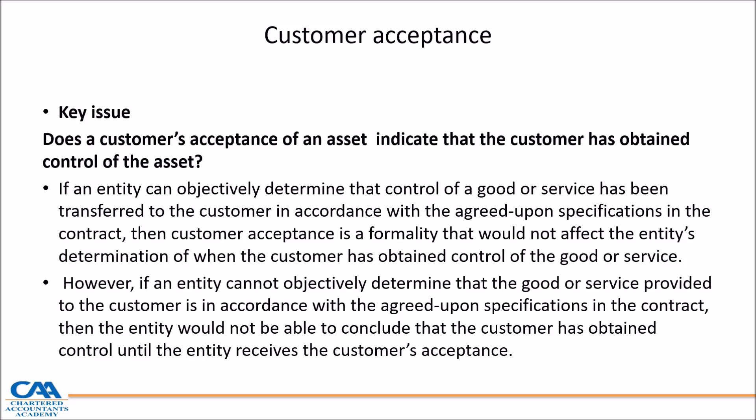Finally, customer acceptance: does a customer necessarily need to accept an asset for you to say they've obtained control? If an entity can objectively determine that control of goods or services has been transferred to the customer in accordance with agreed-upon specifications in the contract, then customer acceptance is just a formality. But if the entity cannot objectively determine that the product is within agreed-upon specifications, they need to wait for the customer to accept. I hope this recording was helpful. Go to your B part, work through the examples yourself, and build your appreciation of these complex areas. Thank you — if you have any questions, feel free to contact the finance department.